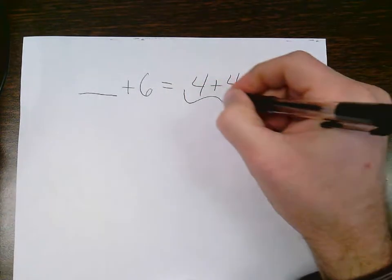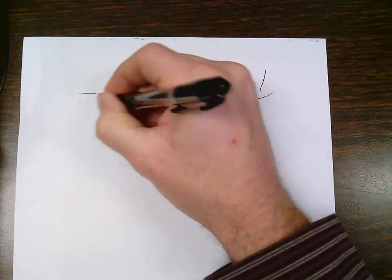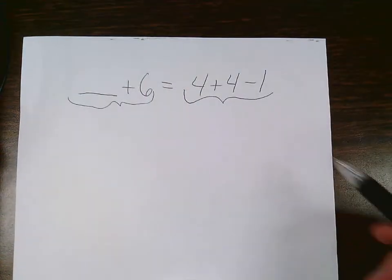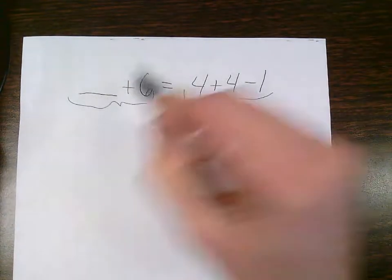After I find the alligator, I split my problem apart at the alligator. Then I do the side that I know. I don't know this side because there's a missing part to it.